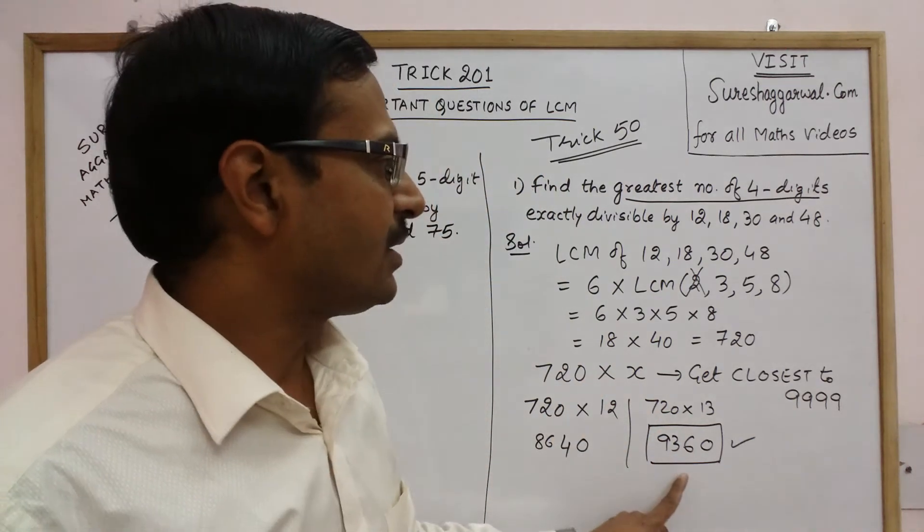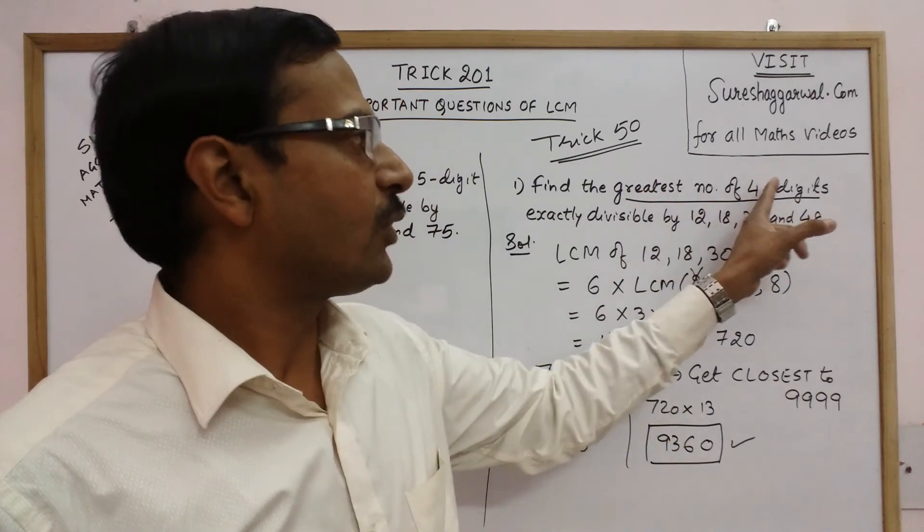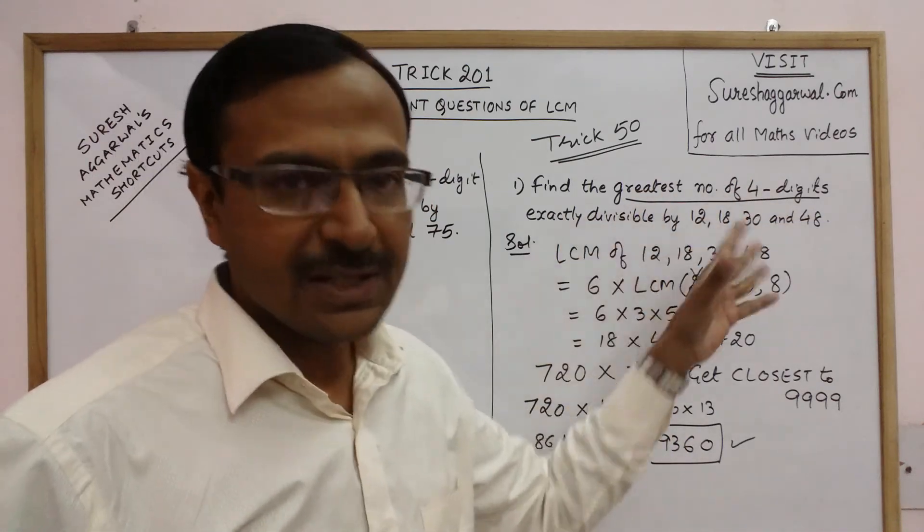9360 is the greatest number of four digits which is exactly divisible by these four numbers.